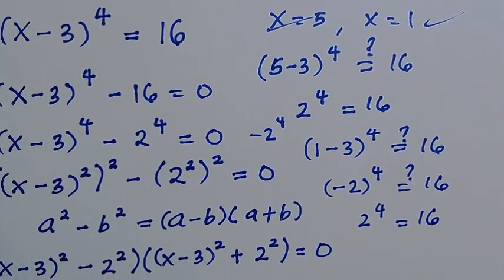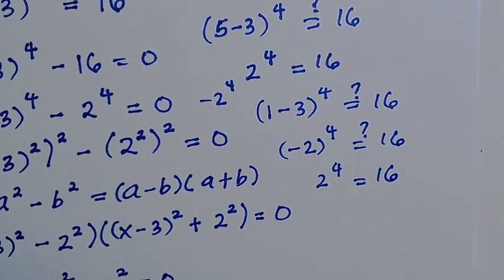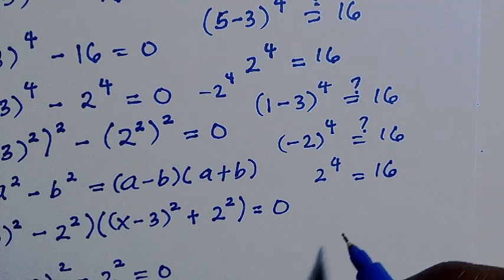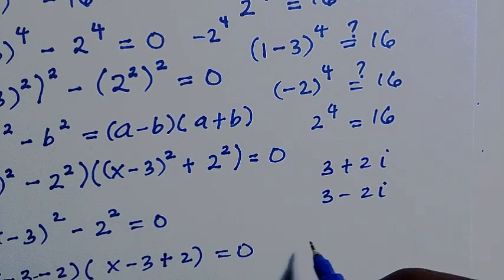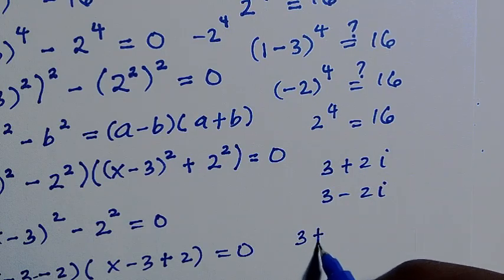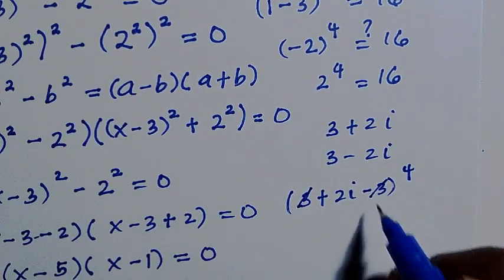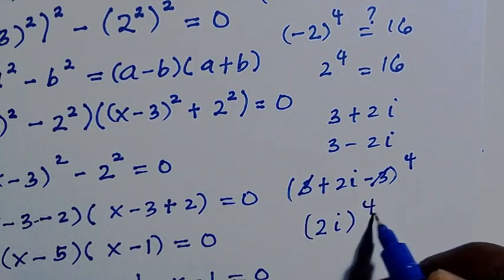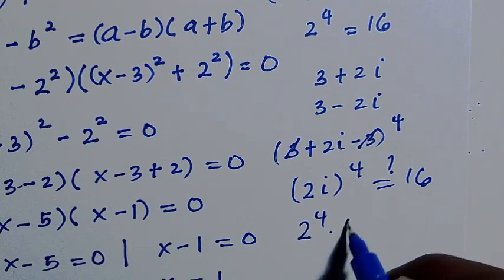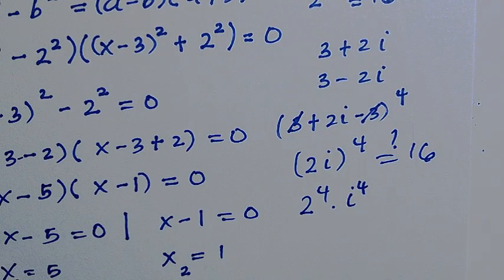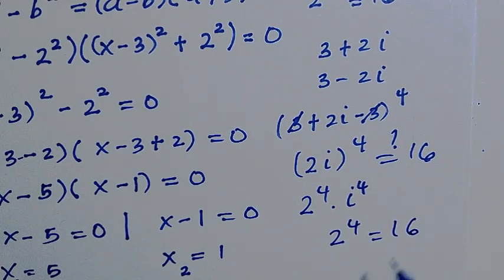For the complex solutions, I'll leave a tip. For x equals 3 plus 2i, substituting in gives (3 plus 2i minus 3) to the power of 4, which is (2i) to the power of 4. We separate this as 2 to the power of 4 times i to the power of 4. Since i to the power of 4 equals 1, we get 16. So that solution also works. Try checking 3 minus 2i yourself and drop the answer in the comment box.